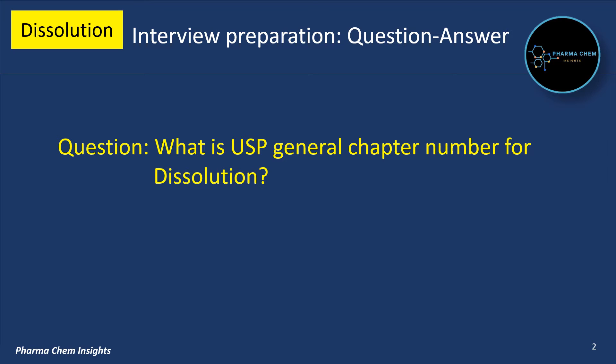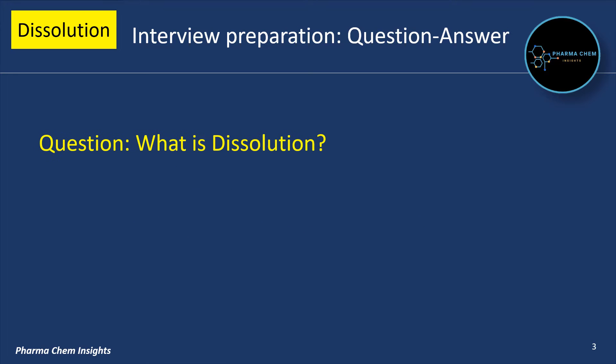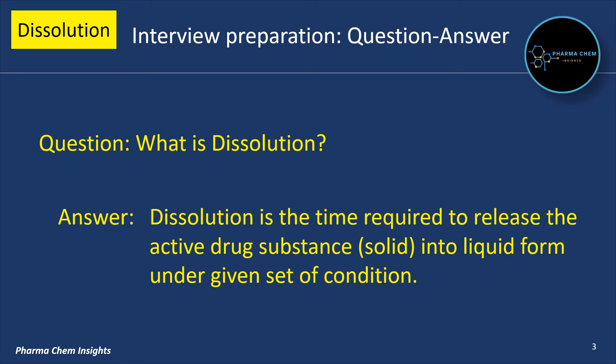What is the USP general chapter for dissolution? The USP general chapter for dissolution is 711. What is dissolution? Dissolution is the time required to release the active drug substance from solid into liquid form under a given set of conditions, such as temperature, RPM, dissolution medium, etc.